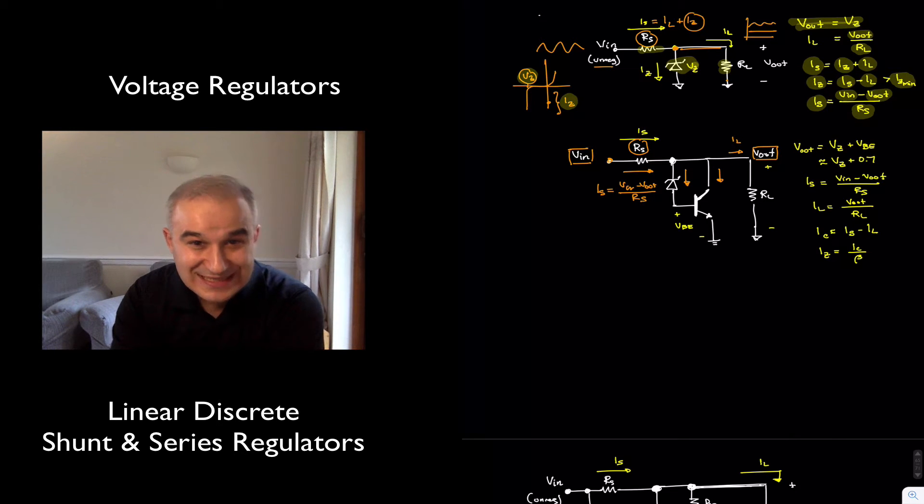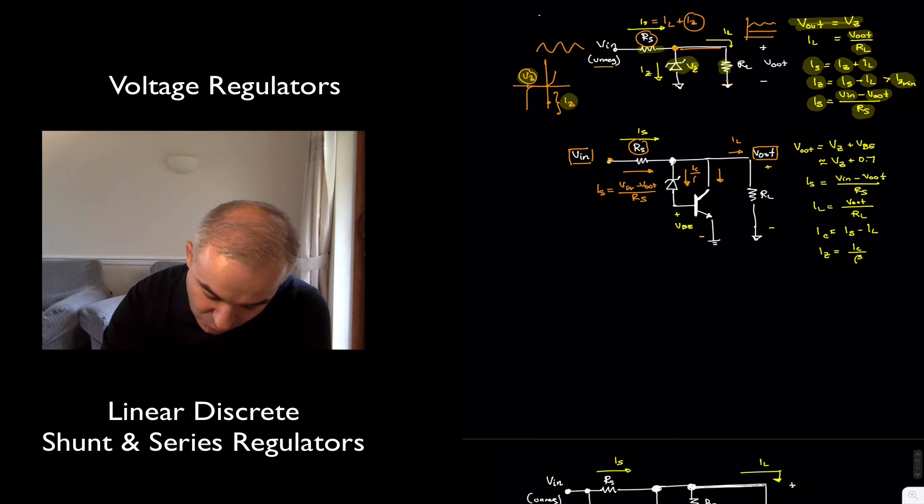because the ZENER is in series with the base of the transistor, this is going to be a small current, right? This is going to be actually IC over beta.